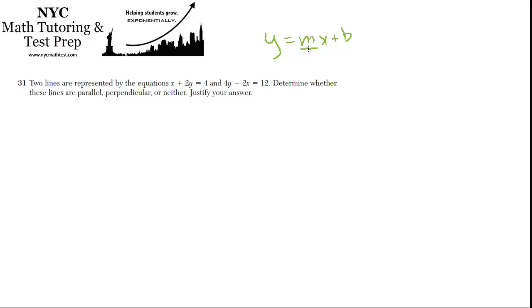Then look at the m. If the m's are the same, we'll know the lines are parallel. If the m's are opposite reciprocals of each other, we'll know the lines are perpendicular. And if the slopes are neither of those two things, then we'll know they're neither parallel nor perpendicular.